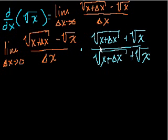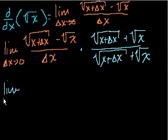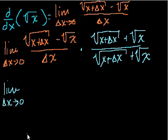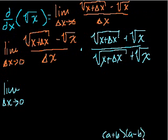We can do that — this is 1 over 1, we're just multiplying by 1. Now, the numerator is (a − b)(a + b). Let me do a little aside: (a + b)(a − b) = a² − b².